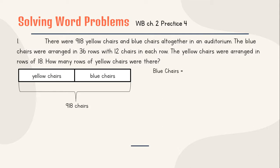So we know that yellow chairs plus blue chairs equals 918 chairs. After that, we have the information that the blue chairs were arranged in 36 rows. So that is the row 36 and each row will be 12 chairs per row. So can we know how many blue chairs are there? Yes. It is simply like rectangle, right? So if this is 36, this will be 12, 12, 12, 12, 12, 12, until 36 rows. So how can we find out how many blue chairs are there by multiply it. 36 rows times 12 equals 432 blue chairs.